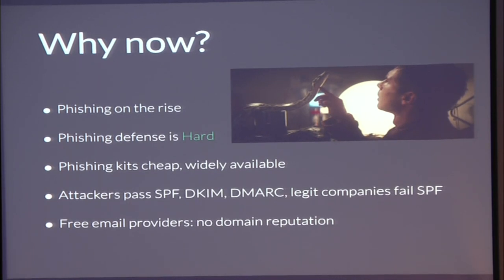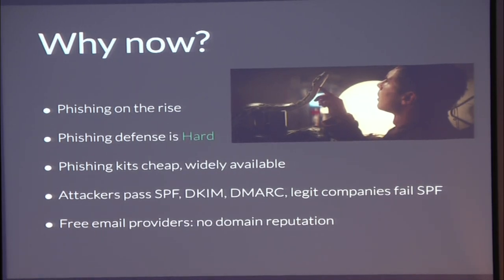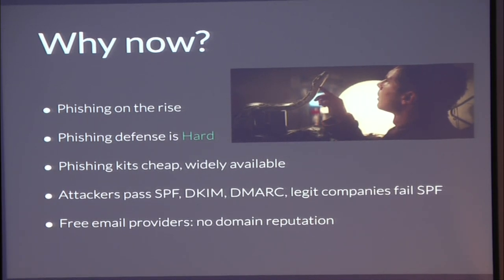Why now? Phishing is a big problem. It's on the rise and phishing defense is hard. Attackers are getting more sophisticated — their phishing kits are cheap and widely available. There was a great talk this morning about how they're more sophisticated and widely available. Attackers are passing SPF, DKIM, and DMARC, so as defenders we're left with fewer tools to determine legitimacy or malice. To put a cherry on top, legitimate companies are failing SPF — Twitter, Amex — these big companies can't even pass SPF themselves. Free email providers don't have domain reputation to go off of, so what do you have to go off of when it comes to senders? That's part of why this is relevant now.